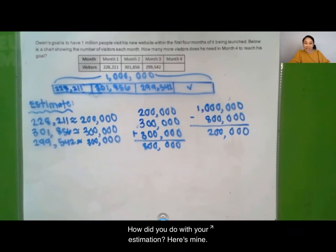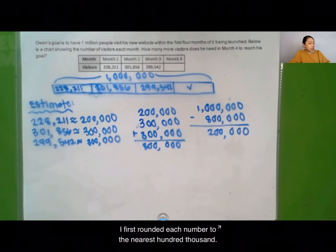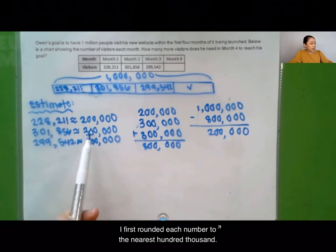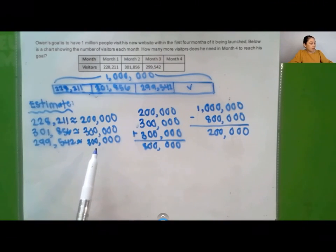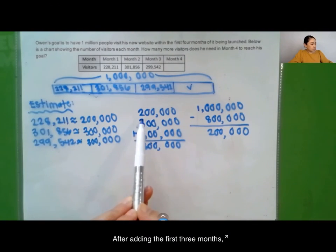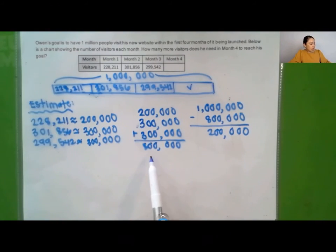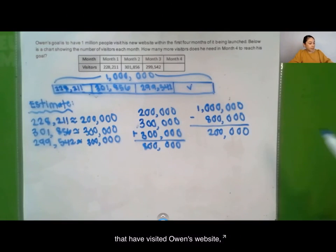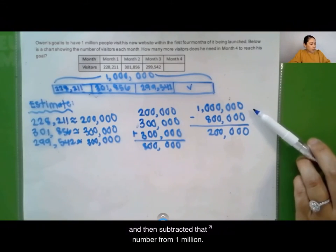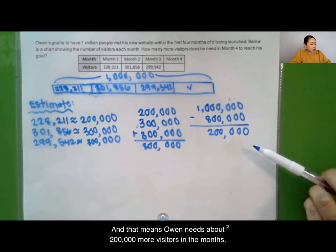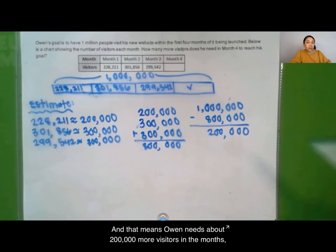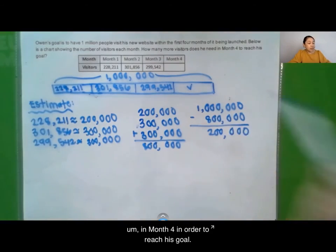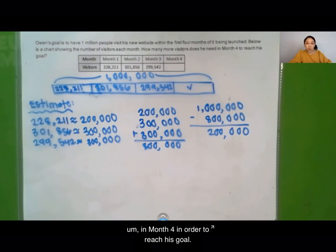How did you do with your estimation? Here's mine. I first rounded each number to the nearest hundred thousand. After adding the first three months, I know there are about 800,000 visitors that have visited Owen's website. I then subtracted that from one million, which means Owen needs about 200,000 more visitors in month four to reach his goal.